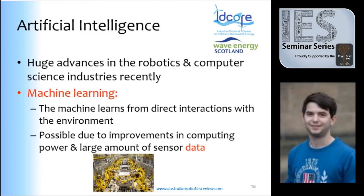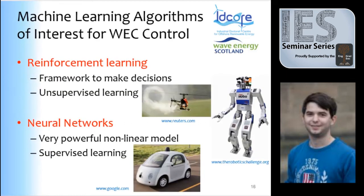We looked into artificial intelligence because there have been huge advances recently. Machine learning in particular involves machines that learn from direct interactions with the environment — that sounded really cool. So we decided to look into this and apply it to the wave control problem. Given a three-year project — actually two and a half — I focused on two things: reinforcement learning and neural networks.